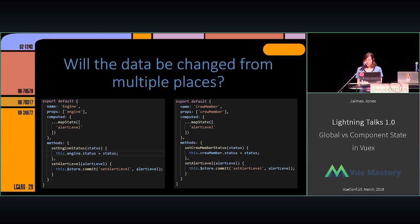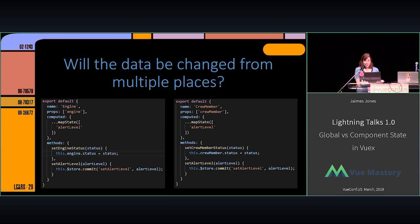As far as data changing from multiple places, this is generally something that should live in your global state. For example, if you have an alert level that can be set from pretty much anywhere — a crew member can set it, or the engine breaking down can set it — you can commit and set that alert level from anywhere, which is probably a good thing.